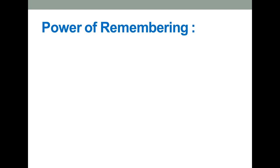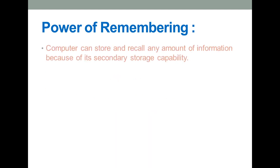The next characteristic is power of remembering. A computer has the power of storing a huge amount of data or information. You can save large amounts of data because of the large capacity of hard disk drives and secondary storage devices. It can store and recall any amount of information. For example, if you stored some files on your computer, you can retrieve them even after several years.